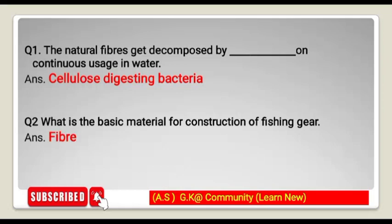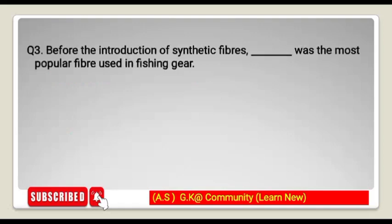Next question: what is the basic material for construction of fishing gear? The answer is fiber — fiber is the basic material for construction of fishing gear. Next question: before the introduction of synthetic fibers, which was the most popular fiber used in fishing gear? The answer is cotton. Cotton was most used before synthetic fibers.